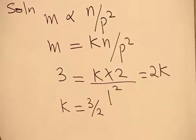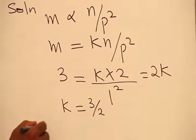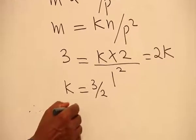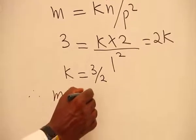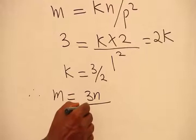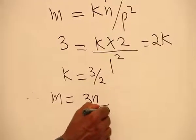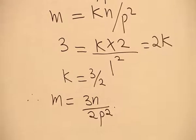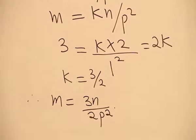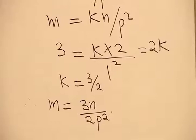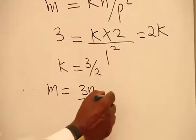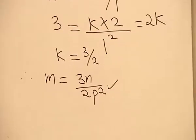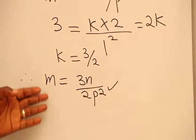Now, with this, we can write our M now becomes 3N all over 2P squared. This is what connects M, N, and P, which is the solution to the problem. This is the equation connecting M, N, and P.